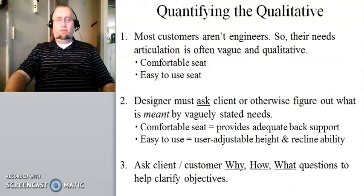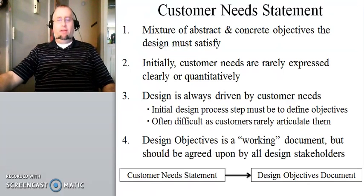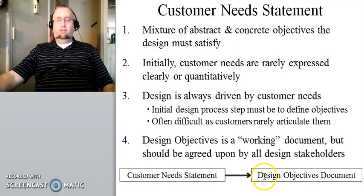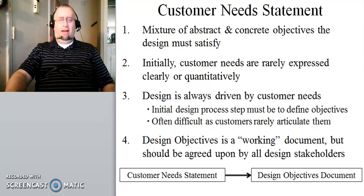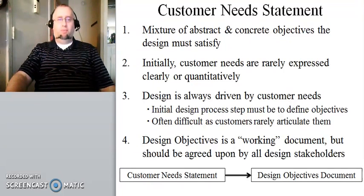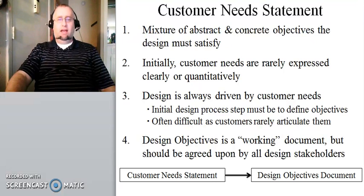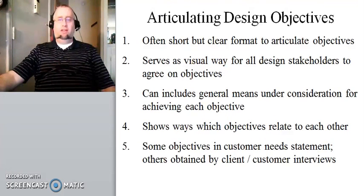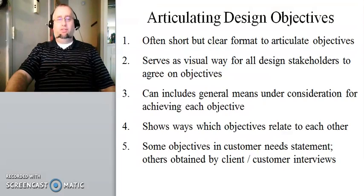I'm going to go back to the first slide that we looked at, just to remind you that what we're really talking about here is converting a customer needs statement into a design objectives document. A customer needs statement is a qualitative, poorly described, customer-given version of the design problem, whereas the design objectives document is produced by the engineering designer — a much more concise, crisp description of the objectives. We want something that is short but clear, and that serves to allow all the stakeholders to agree on the design objectives.